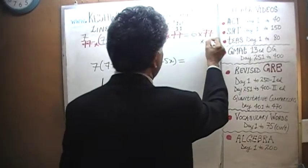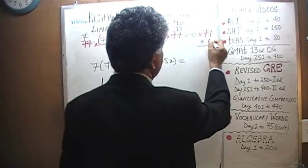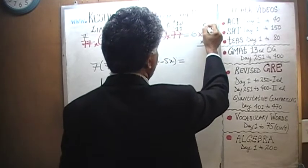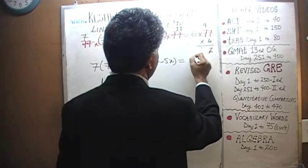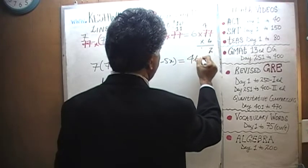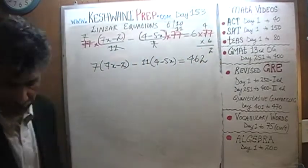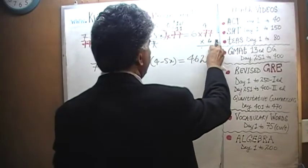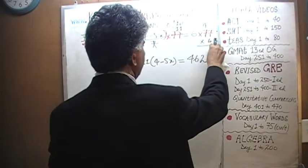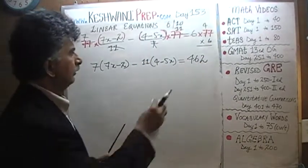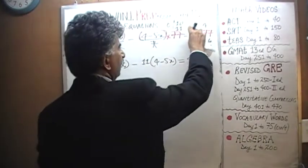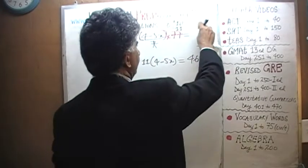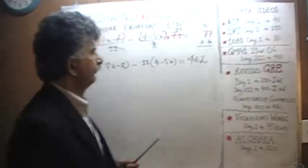We have no choice, let's do it right here. 6 times 7 is 42, carry 4. 6 times 7 is 42, plus 4 is 46. So 6 times 77 equals 462.